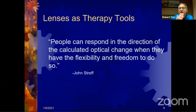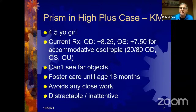Let's learn through cases. This is KM — we'll talk about how we used prism in a case with high plus lenses. She's a four-and-a-half-year-old girl who came in wearing glasses — she's got some high plus here. She's been diagnosed with accommodative esotropia. Her best corrected acuities are about 20/80 OD and OU, and 20/50 OS. Her biggest complaint is that she can't see far objects.